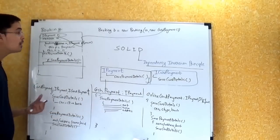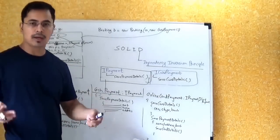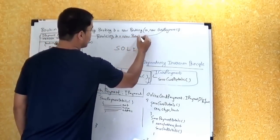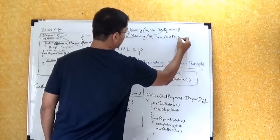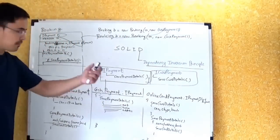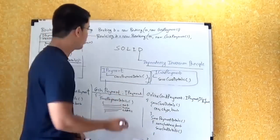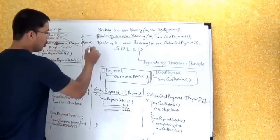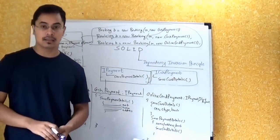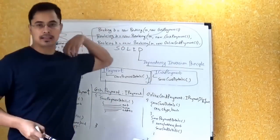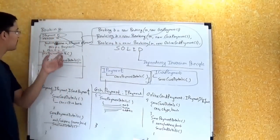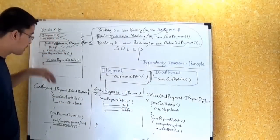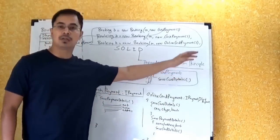Now, wherever I instantiate Booking — in the consuming class — if the member is using card payment, I say: Booking b = new Booking(someMember, new CardPayment()). If cash payment, I instantiate accordingly. If online card payment, similarly. This if/else logic belongs in the consuming class, not inside the Booking class — because it is not the Booking class's responsibility to decide which IPayment implementation to use.